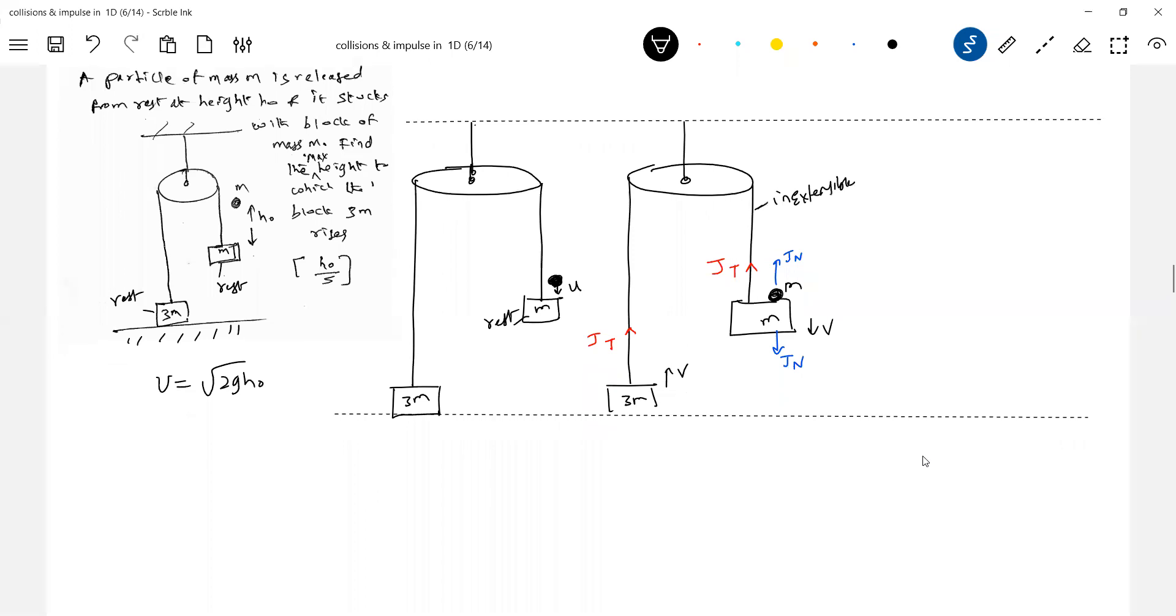Let's write the equations now. MU minus JT equals M plus M into V. Don't write conservation of linear momentum. Can we do like this? MU equals M plus M, 3M? You should not do this. You should write impulse-momentum equation individually for this particle block, individually for this block.